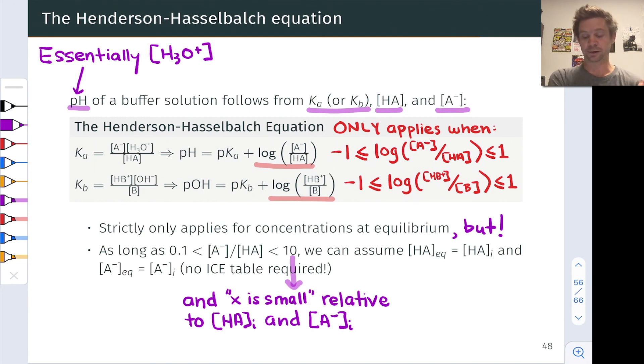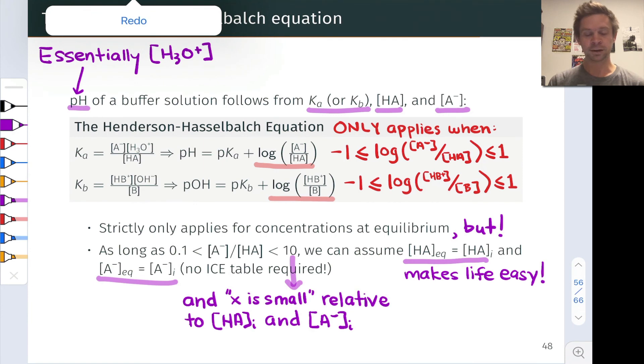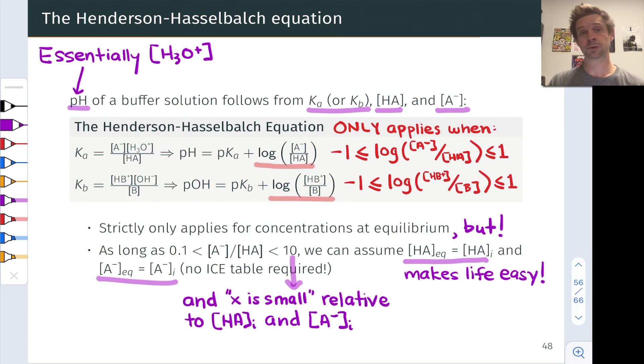X is small relative to the molarities, the initial molarities of the conjugate acid and conjugate base, we can assume that the equilibrium HA concentration is pretty much equal to its initial concentration and the equilibrium concentration of A- is pretty much equal to its initial concentration. And this makes life easy because no ice table is then required to apply the Henderson-Hasselbalch equation. We can proceed immediately from concentrations we know, for example, from stoichiometry of HA and A-, right to a predicted pH for the buffer system.